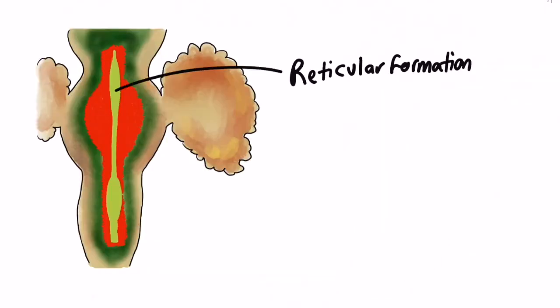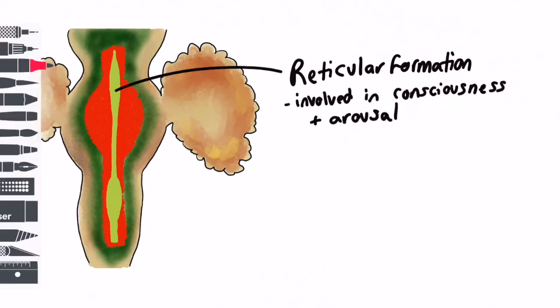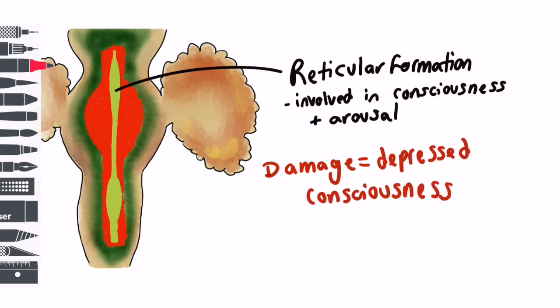Physiological centres include the reticular formation which is involved in consciousness and arousal. Damage to the reticular formation may present as depressed consciousness.